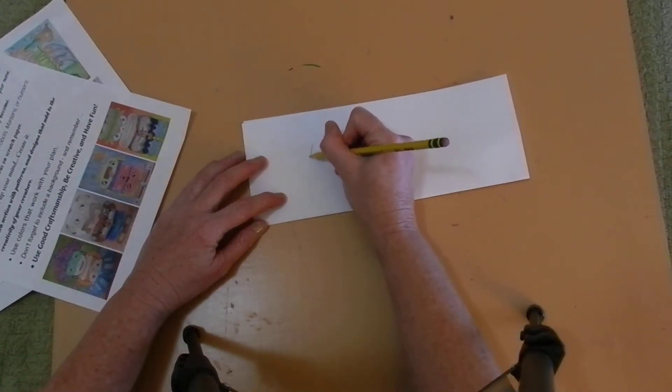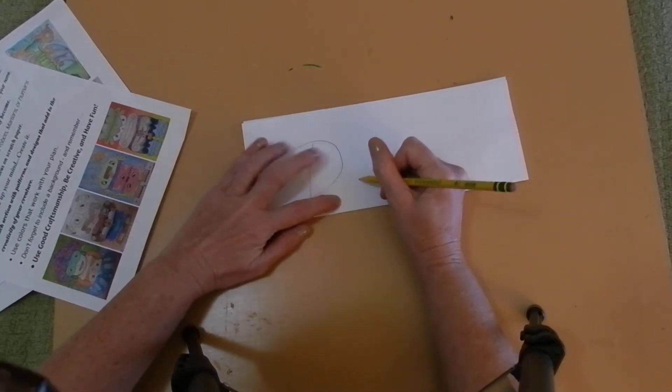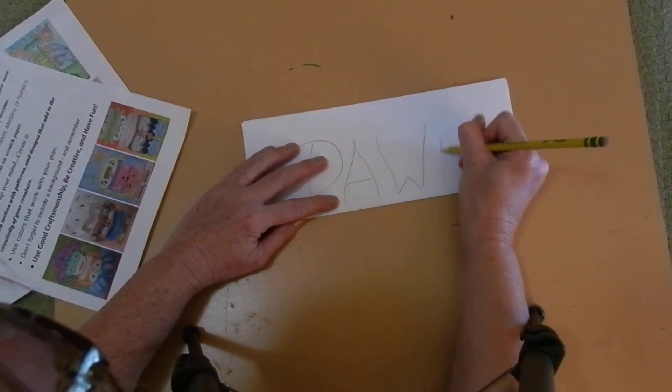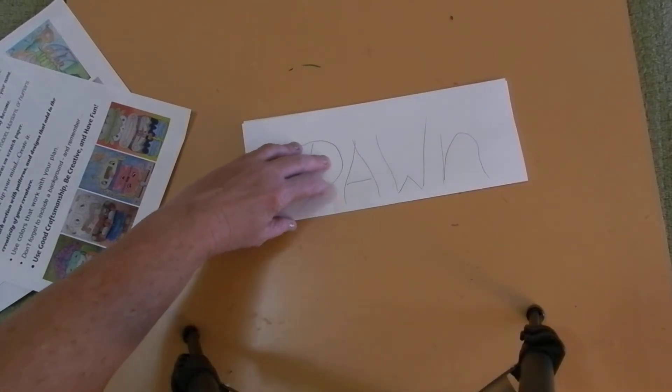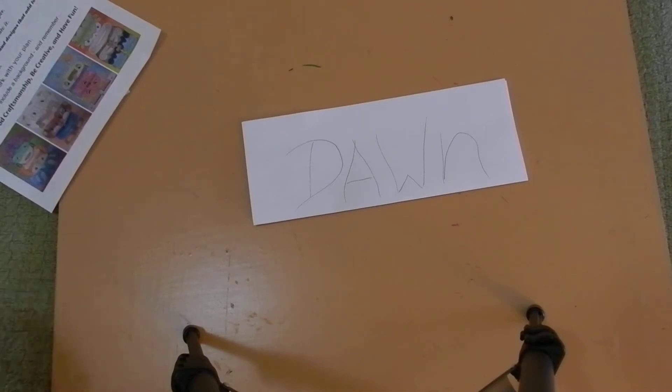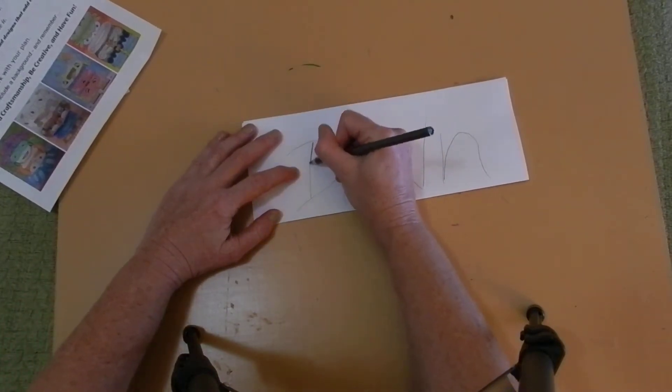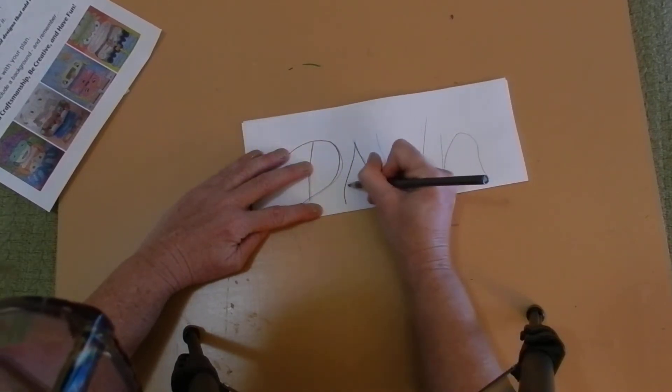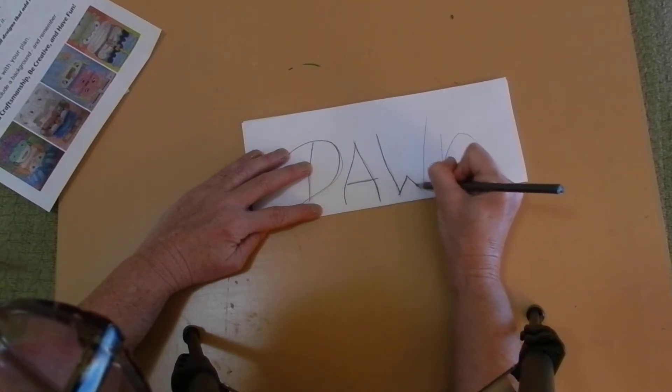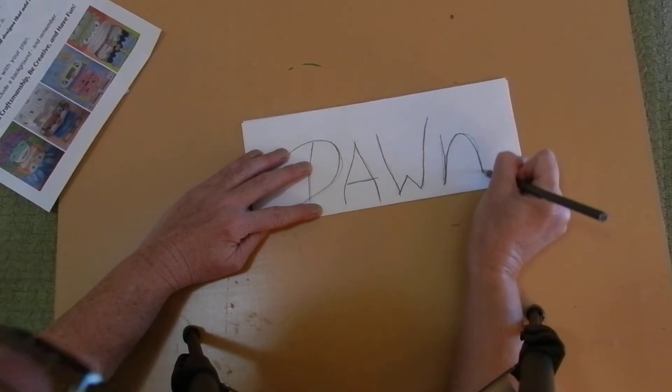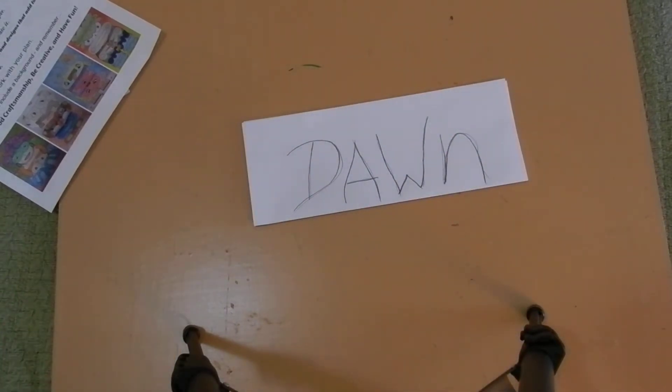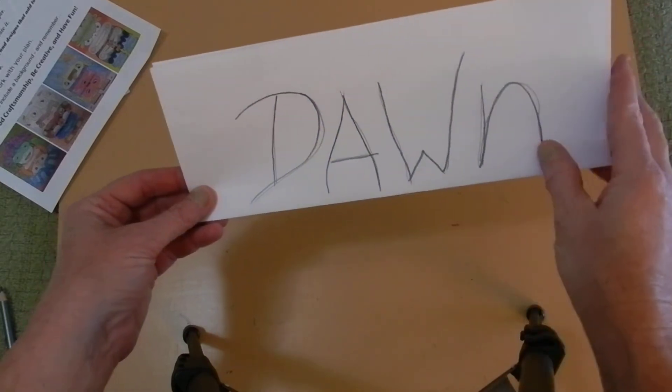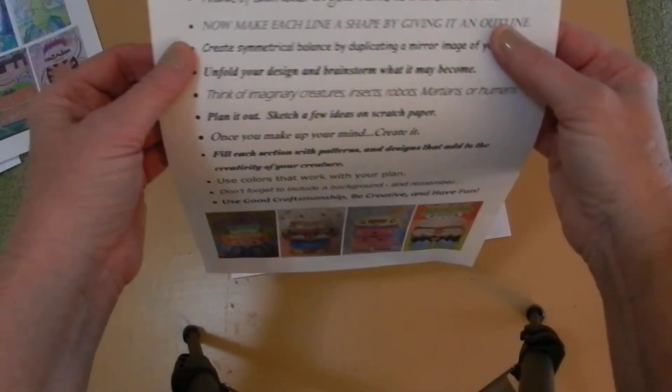When I draw my name, I'm thinking of each letter as a line. Let me make it darker so that you can see it on the screen. So there's my name in linear form. These are zigzag lines, curvy lines, etc. That was step one. Draw your name.